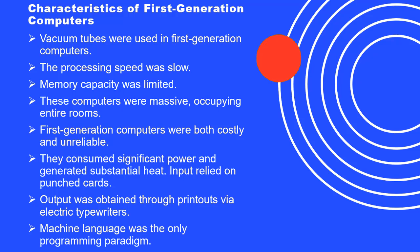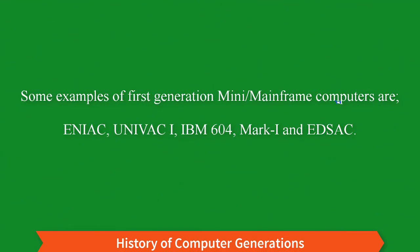Machine language was the only programming paradigm. Some examples of first generation mainframe computers are ENIAC, UNIVAC-I, IBM 604, Mark I, and EDSAC.